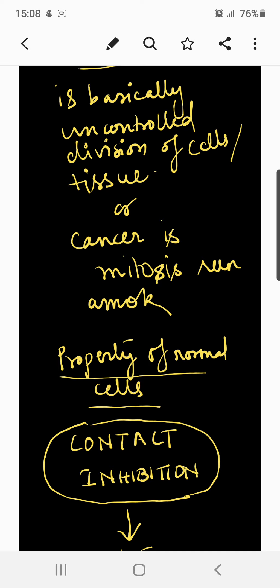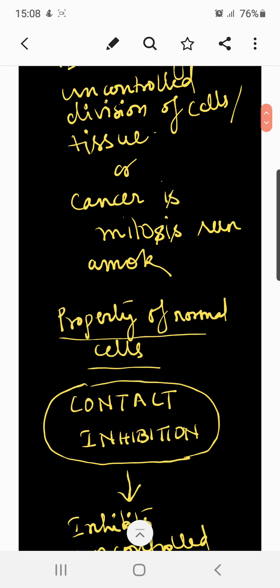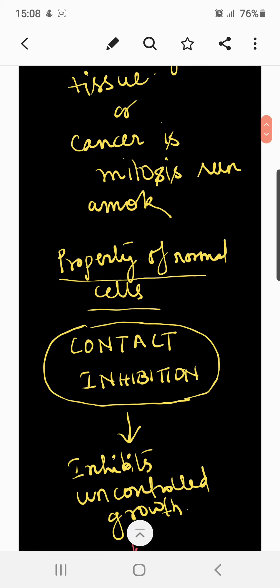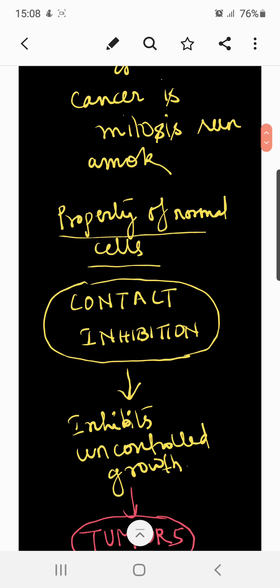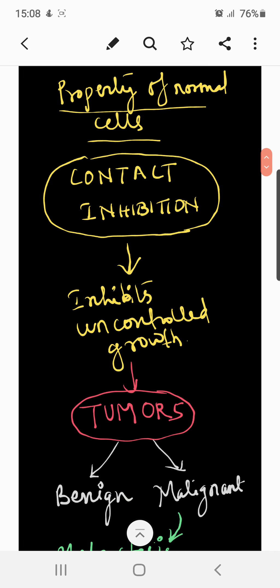But in the case of cancer cells, there is a breakdown of these regulatory mechanisms. Most normal cells exhibit a property known as contact inhibition, by virtue of which contact with other cells inhibits their uncontrolled growth. This does not happen in cancer cells — cancer cells appear to have lost this property. As a result, cancer cells continue to divide, giving rise to a mass of cells which forms tumors.